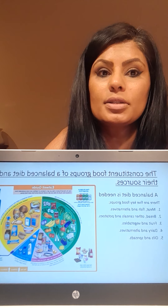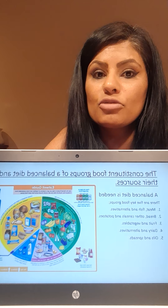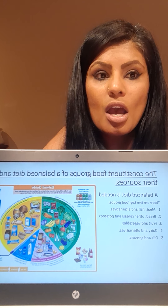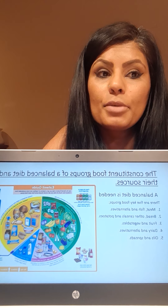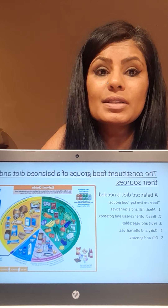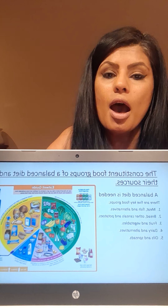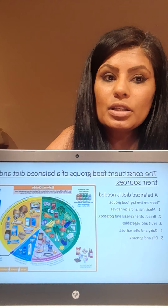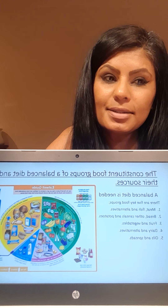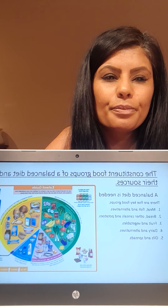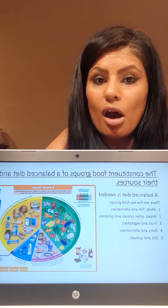Food group four is dairy and alternatives, such as cheese, soya, and yoghurt, which are a source of vitamin D. Milk provides calcium for strong bones and teeth, as well as protein. Lastly, food group five is oils and spreads. These should be eaten in small amounts, as disproportionate amounts can cause obesity, high cholesterol levels, and problems with your heart.